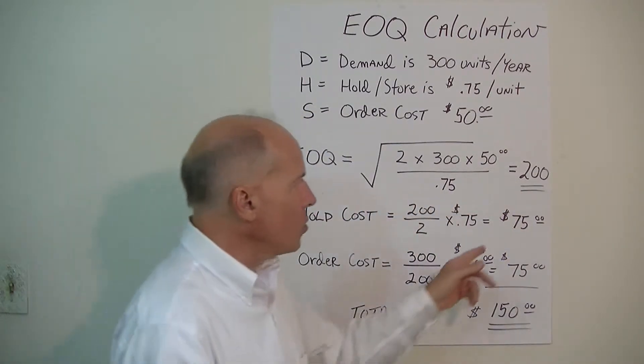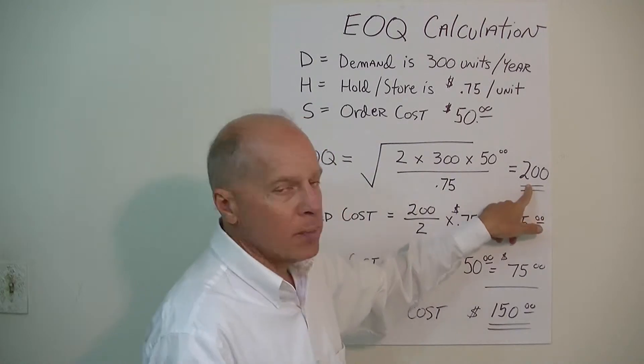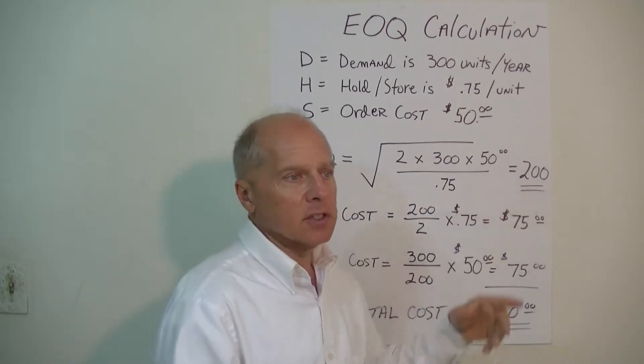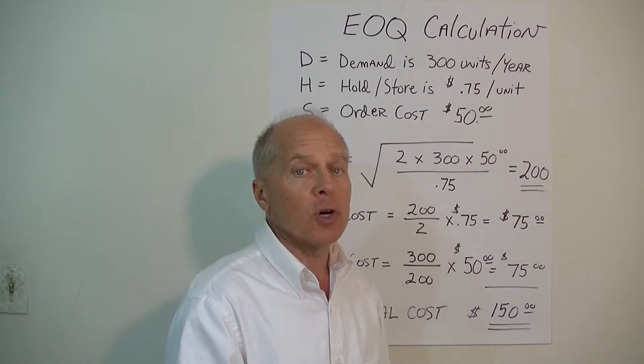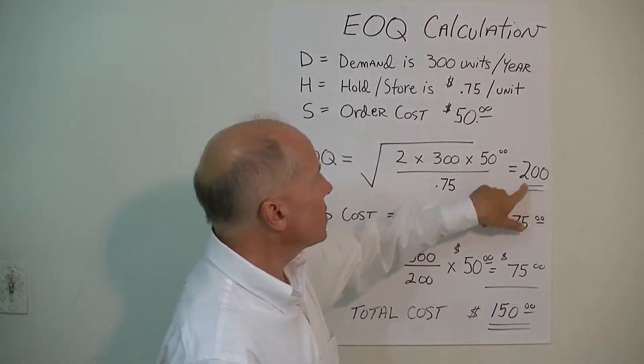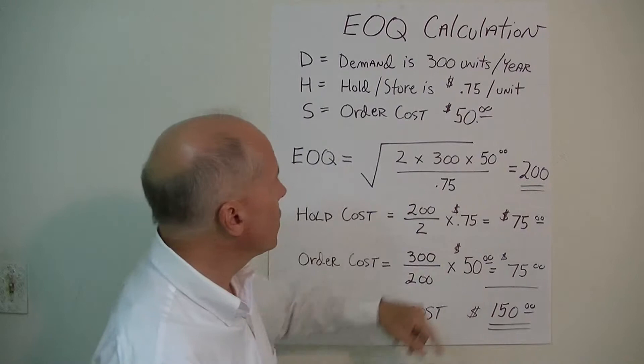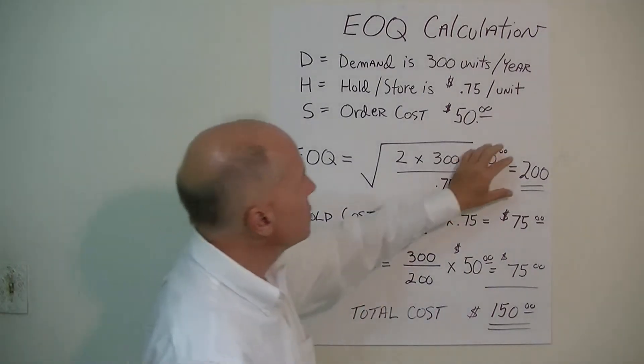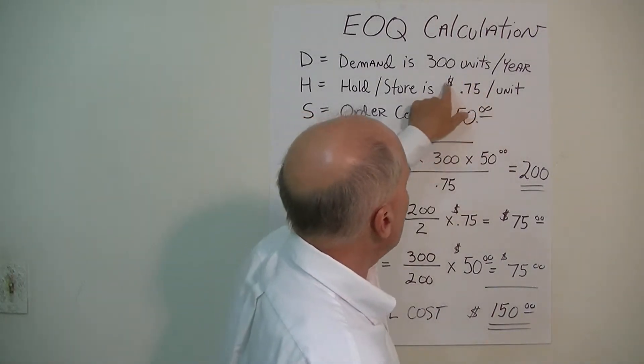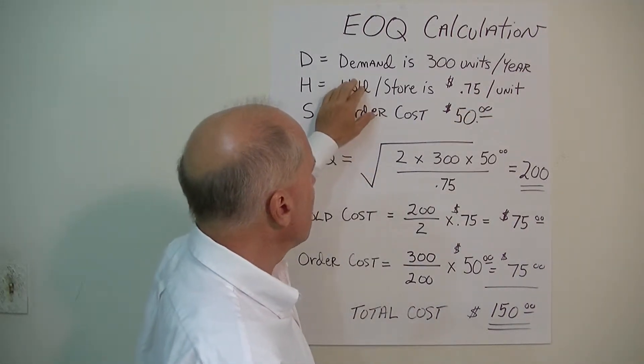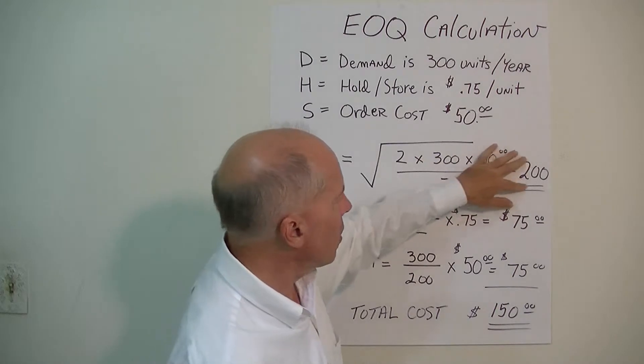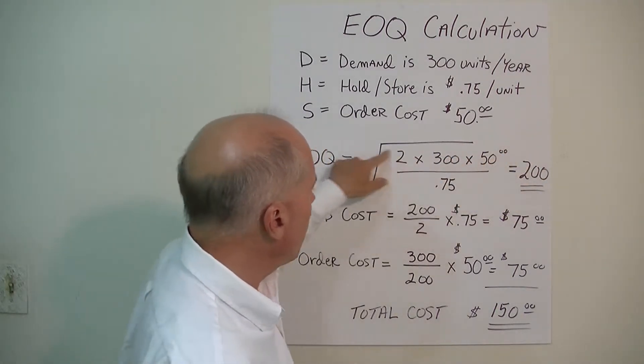The order size, when we replenish these industrial cans of soap, will be 200 cans. That's a rather large order, but the reason it's large is because it doesn't cost very much to keep it on the shelf. Because our holding costs are low, we place a rather large order.